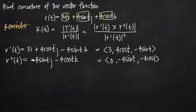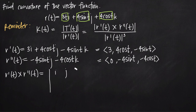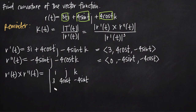The cross product of r'(t) and r''(t) is set up as a matrix with i, j, k in the first row. In the second row we put the first derivative components: 3, 4cos(t), and negative 4sin(t). In the third row we put the second derivative components: 0, negative 4sin(t), and negative 4cos(t). Now we extract the cross product from this matrix.